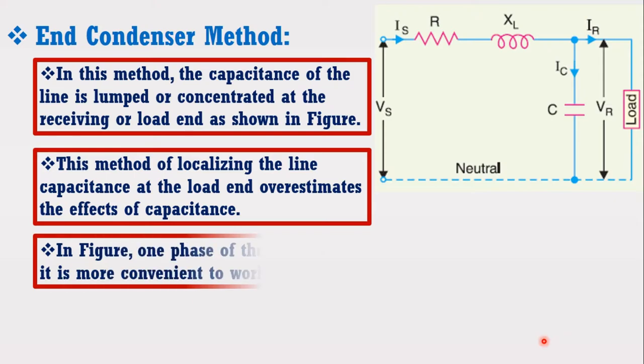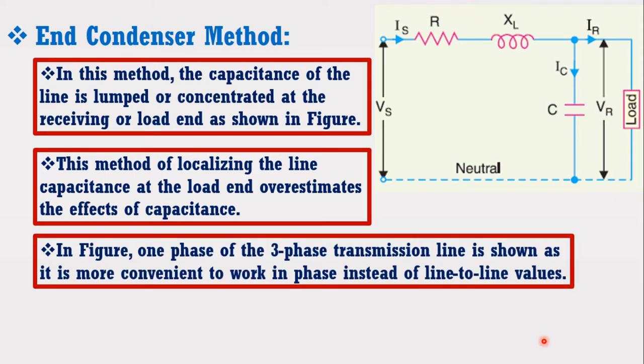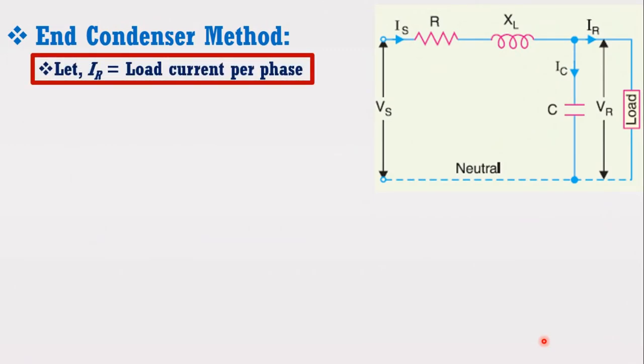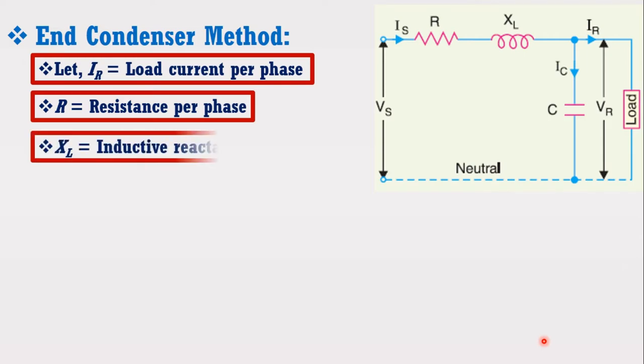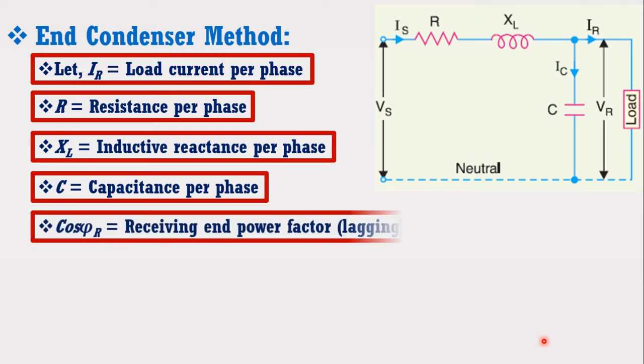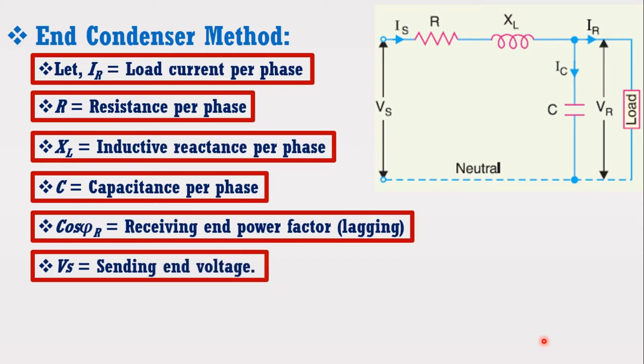In the figure, one phase of the three-phase transmission line is shown. Let IR is the load current per phase, R is the resistance per phase, XL is the inductive reactance per phase, C is the capacitance per phase, cos phi R is the receiving end power factor, and Vs is the sending end voltage.